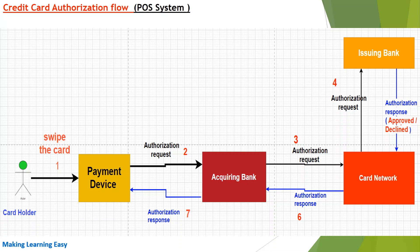Suppose you are at the point of sale system and you are swiping your card. Once you swipe your card, the payment device gets the information from the card and sends the payment details — like the credit card number and all related details — to the acquiring bank.